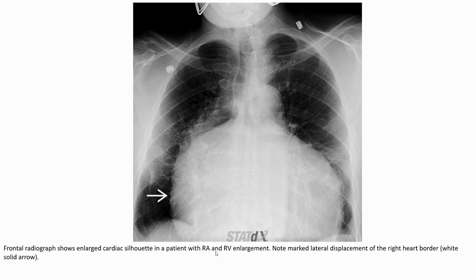The frontal radiograph in a case of right atrial and right ventricular enlargement shows displacement laterally, with a wide solid border characteristic of the enlarged right heart.